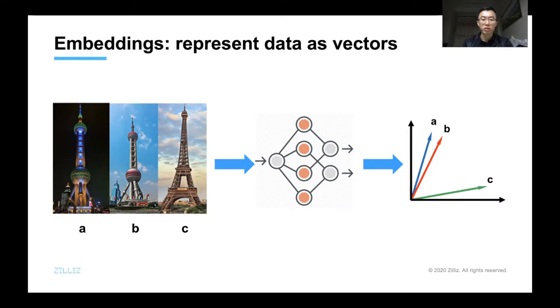Let's take image search as an example. We can train a neural network that transforms similar images to similar vectors. With the vector representation of images, the problem of image search is converted to the problem of vector similarity search, which is also known as the nearest neighbor search for vectors.